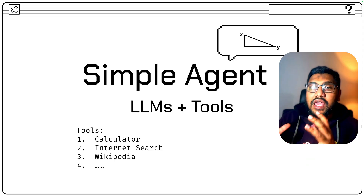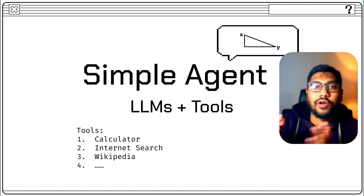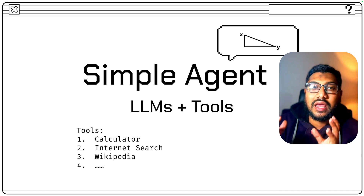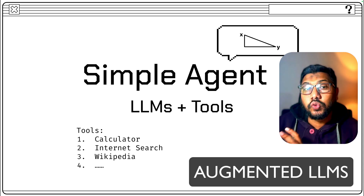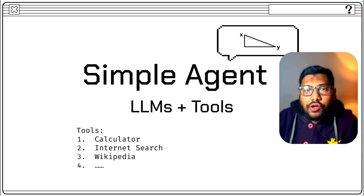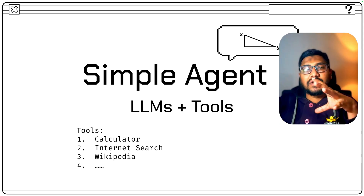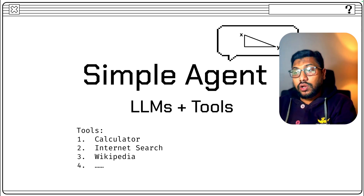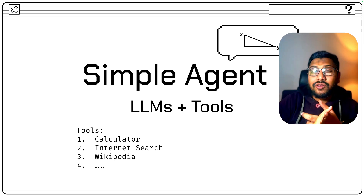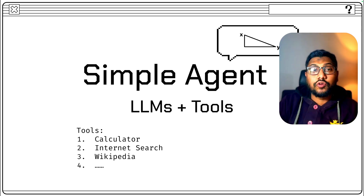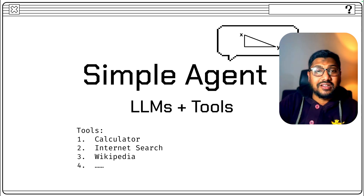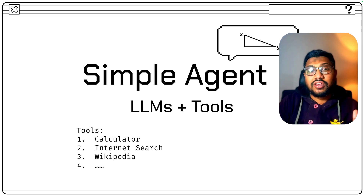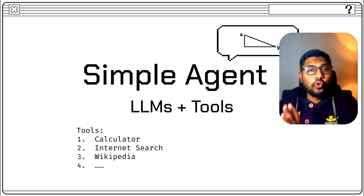If you were to think about agents, primarily what we call agents are nothing but augmented LLMs. LLMs with some kind of a tool is what we simply call an agent. The fundamental version of an agent is LLM plus tool. The tool could be a calculator, a Python REPL, a Wikipedia database, any API, internet search, image generation — whatever you want to give as an augmented tool to an LLM.